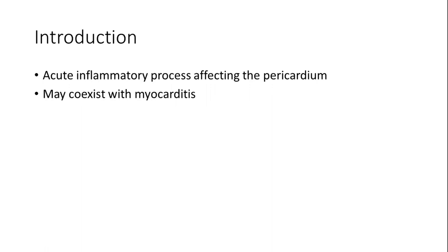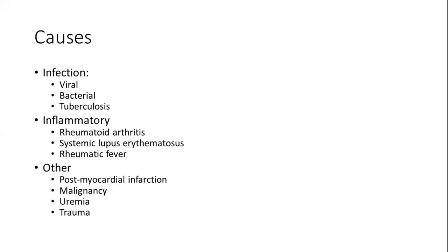If there is coexisting myocarditis, the patient can also have features of myocarditis; otherwise the patient will present with features suggestive of pericardial inflammation. There are various causes of acute pericarditis. Viral, bacterial, and tubercular infections are the common infectious causes. In a country like ours, we should always consider tuberculosis as a cause of pericarditis when evaluating a patient with symptoms suggestive of pericarditis.